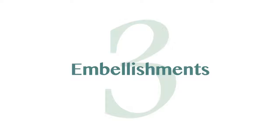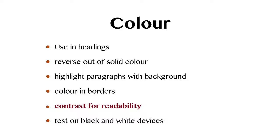What about embellishments? We can use colour — and colour is not going to cost you any more in your eBook. Even if coming from a black-and-white printed book, you can use colour in headings, reverse out of solid colour, and use highlighted text within paragraphs. Be aware though that you must ensure contrast for good readability — don't put dark colours on dark backgrounds. Also test on black-and-white devices: your eBook may look great on an iPad, but what will it look like on a black-and-white Kindle or Kobo?